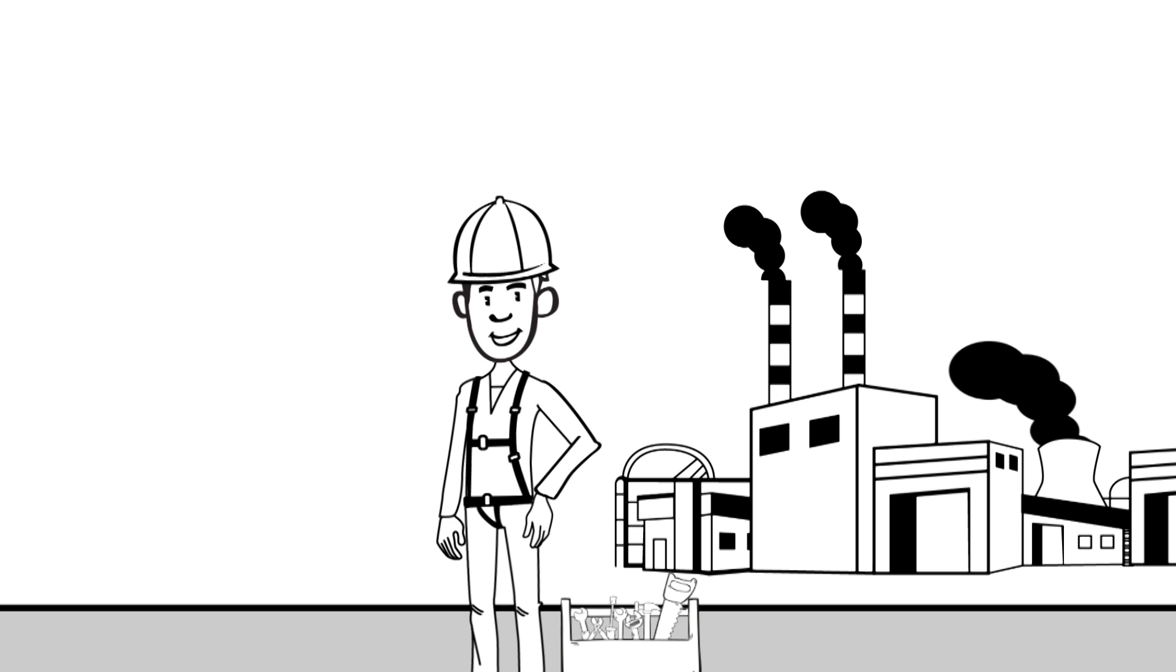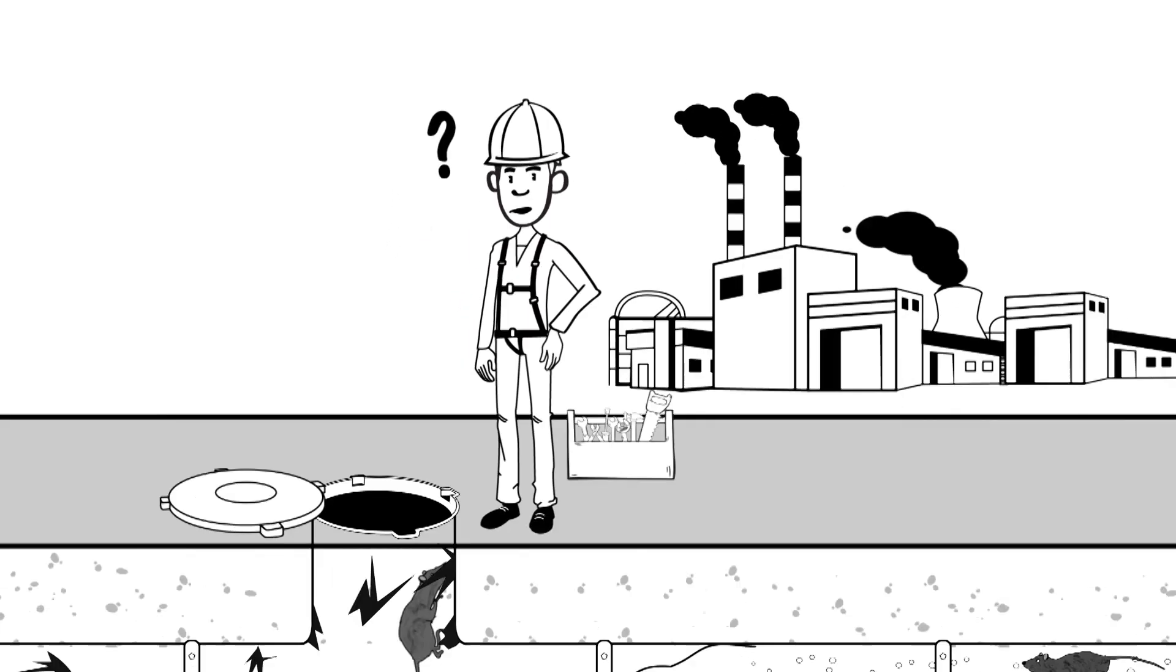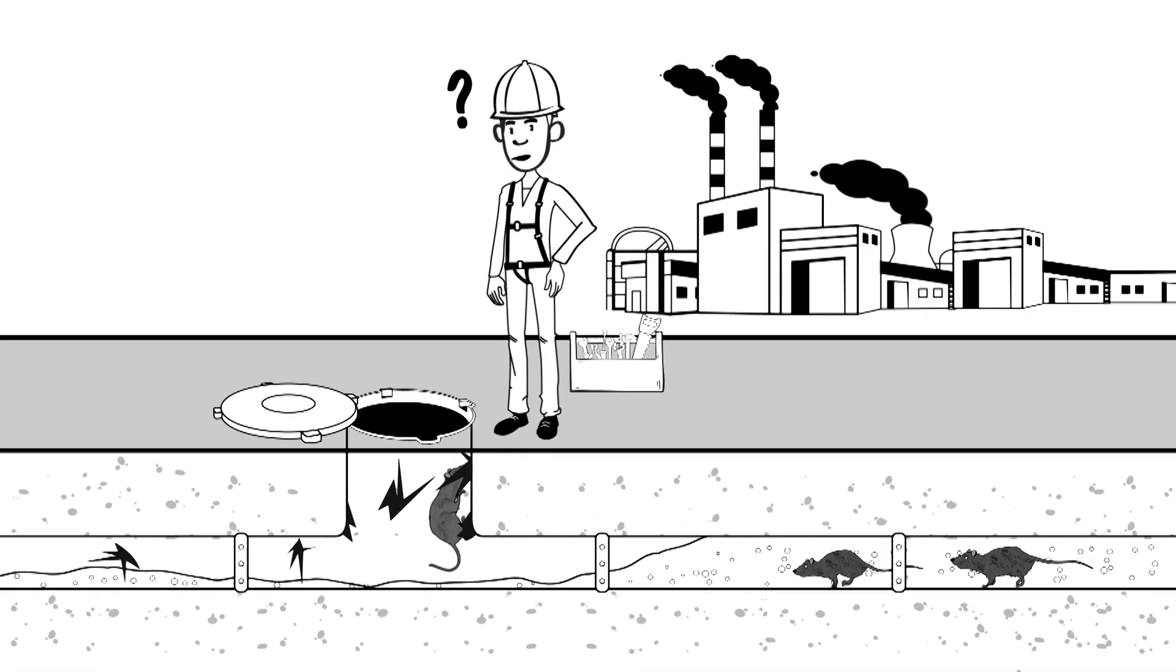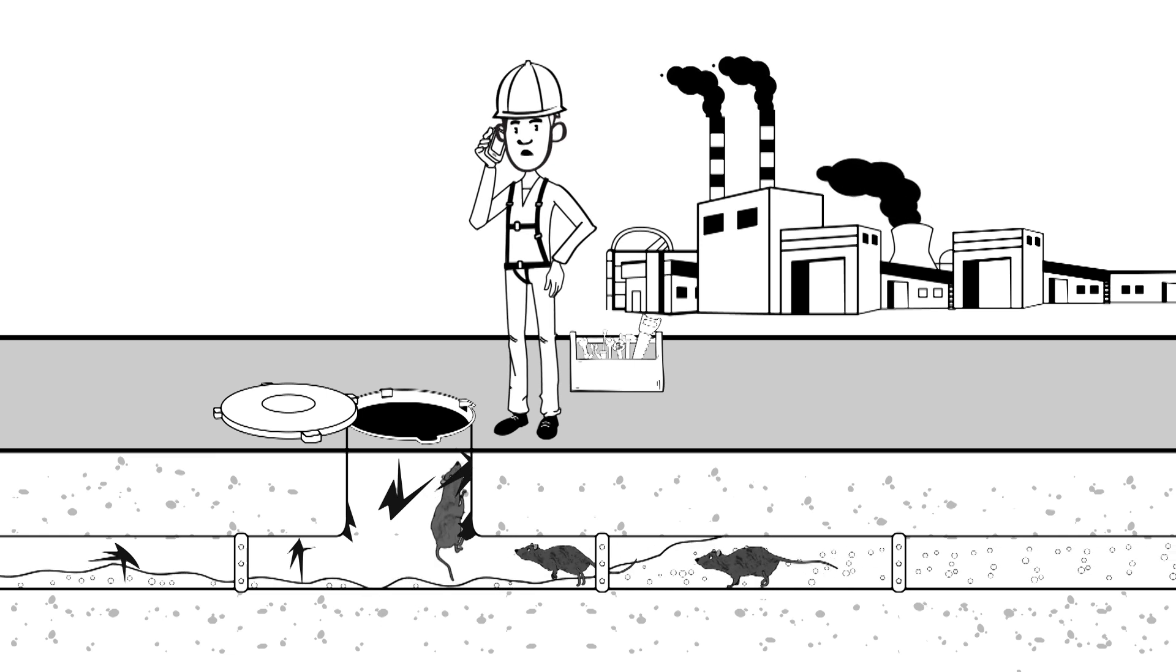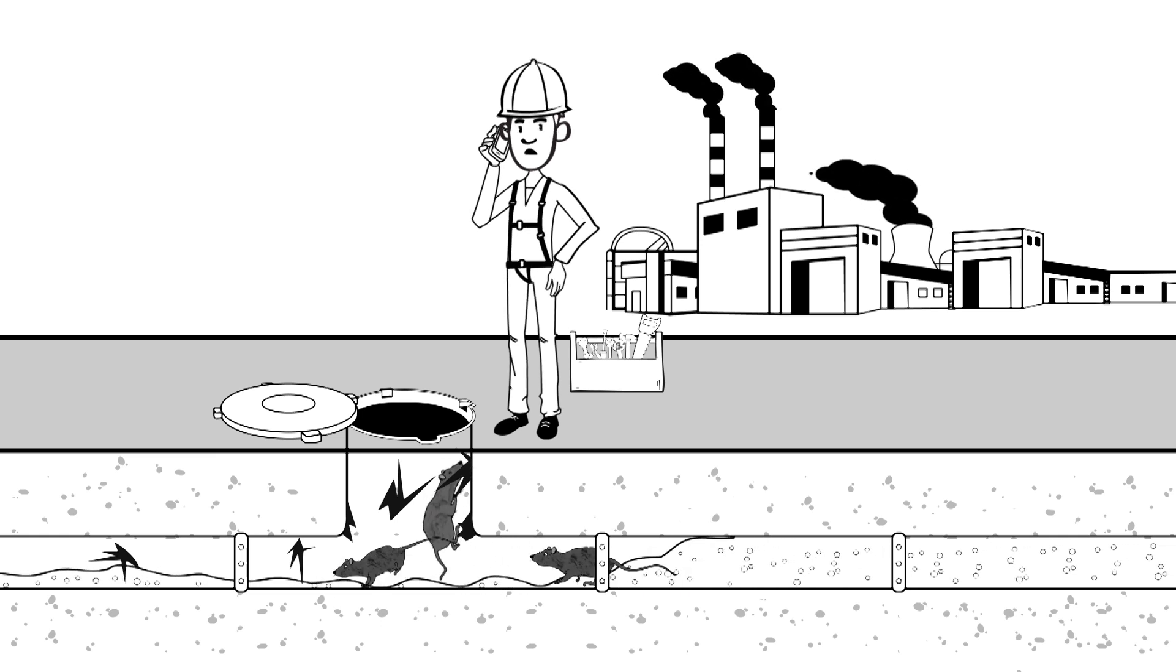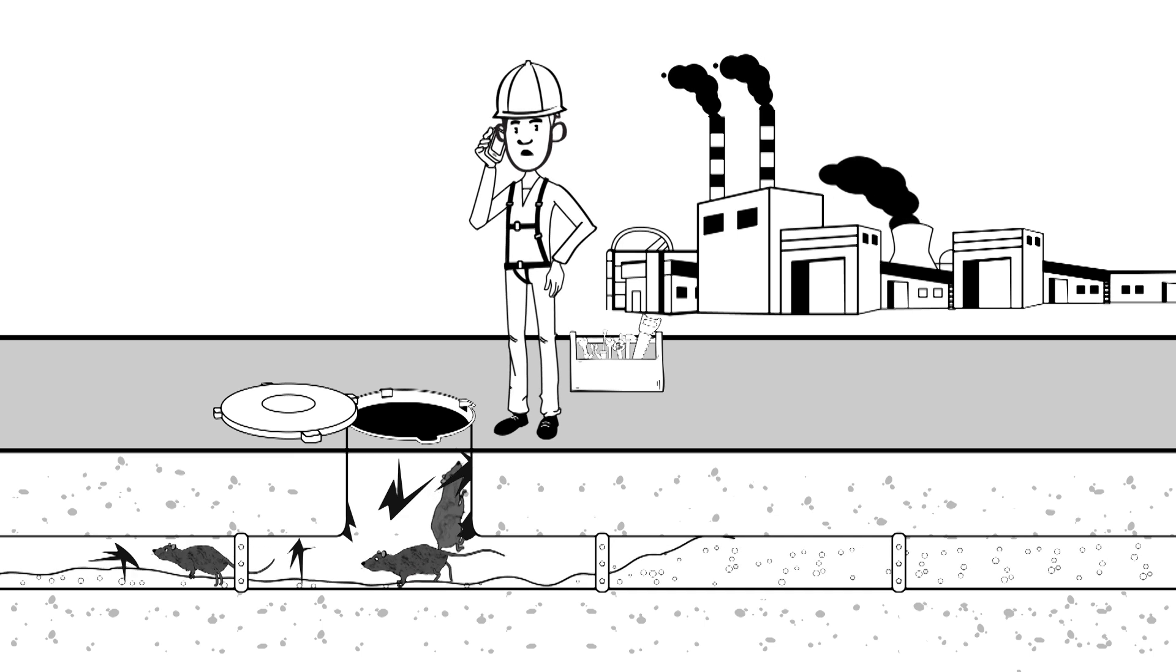Dave is an industrial engineer. He often sees damage caused by rats. Dave calls the office and is told he needs to fit a rat blocker to protect buildings and equipment from damage.